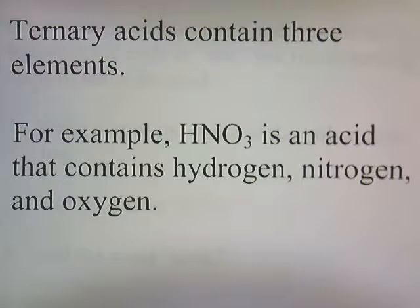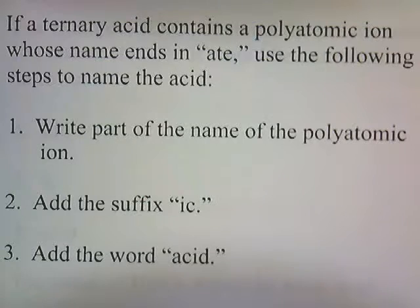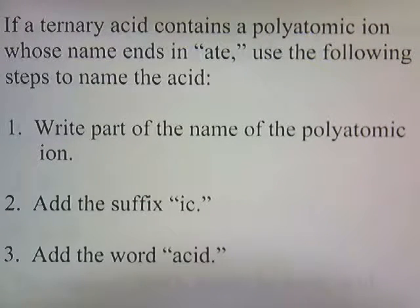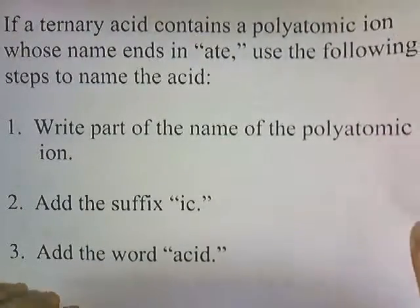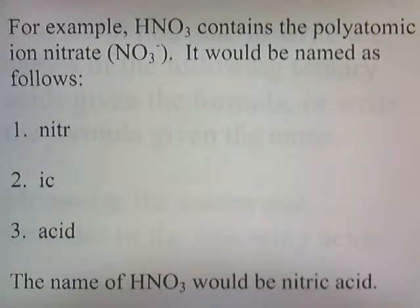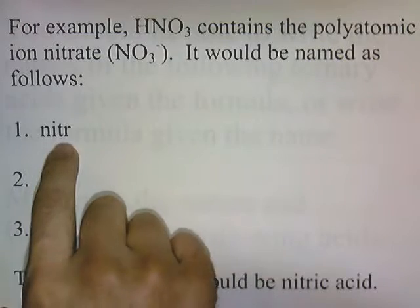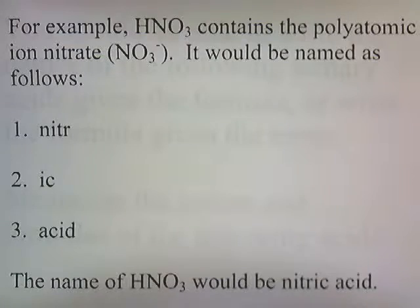Ternary acids contain three elements. For example, HNO3 is an acid that contains hydrogen, nitrogen, and oxygen. If a ternary acid contains a polyatomic ion whose name ends in '-ate', use the following steps: write part of the name of the polyatomic ion, add the suffix '-ic', and then add the word acid. For example, HNO3 contains the polyatomic ion nitrate, NO3. So the name of HNO3 would be nitric acid.